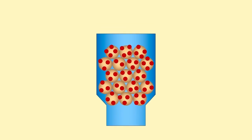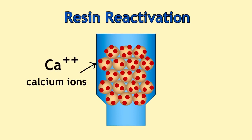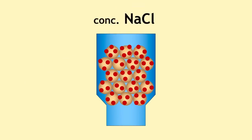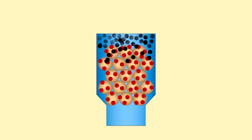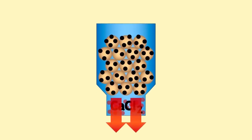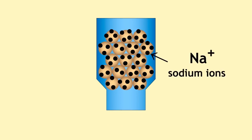Obviously, after a time the resin gets full of calcium ions and you have to reactivate it. To do this, you pour concentrated salt solution — that is, sodium chloride solution at very high concentration — so that it's high enough to reverse the reaction, and the calcium chloride comes out in solution, and the column is again full of sodium ions and ready for use.